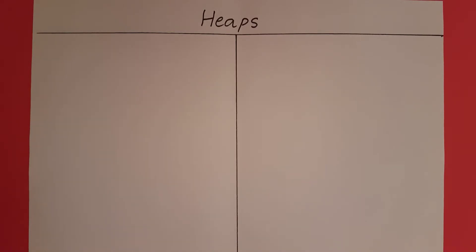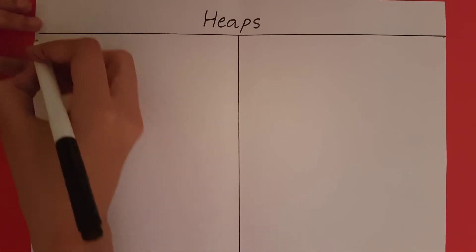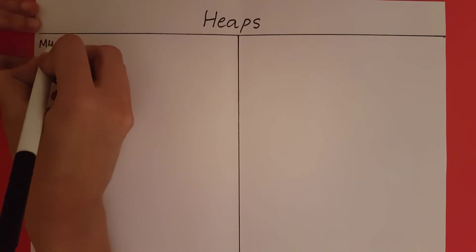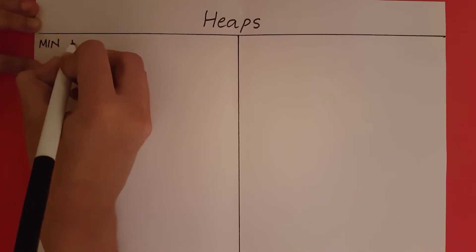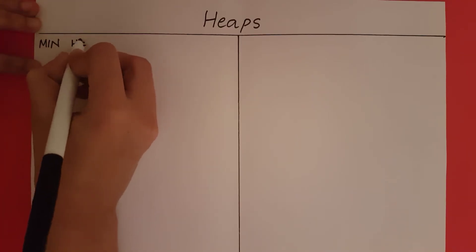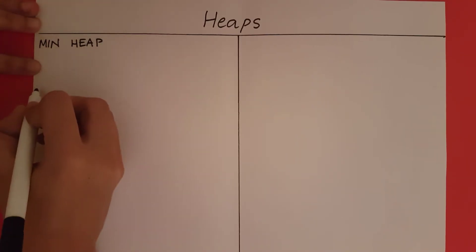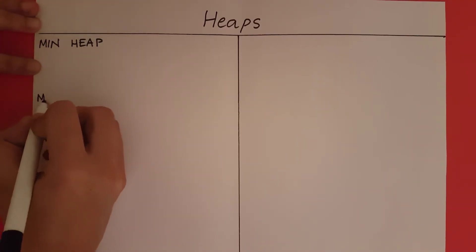Heaps. A heap is a special kind of binary tree. There are two kinds of heaps: there is a min heap and a max heap.